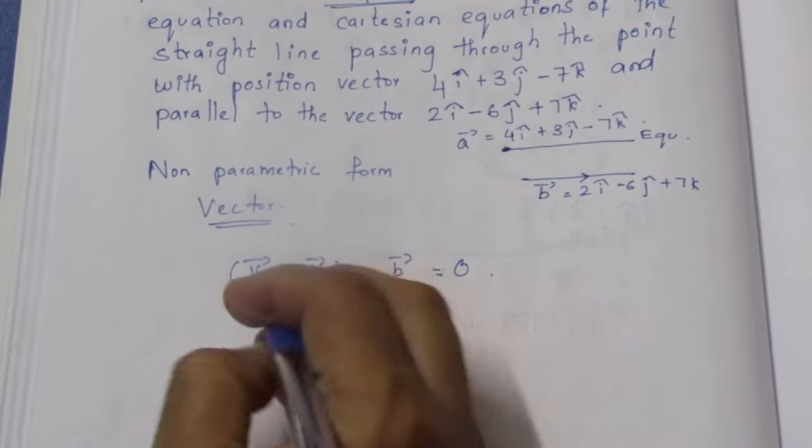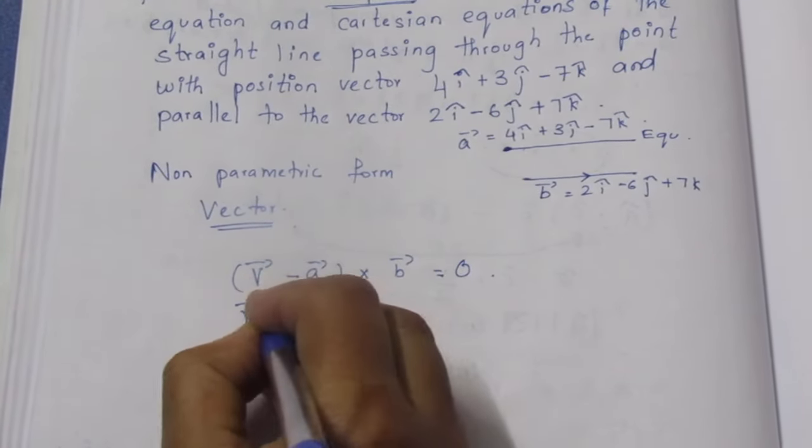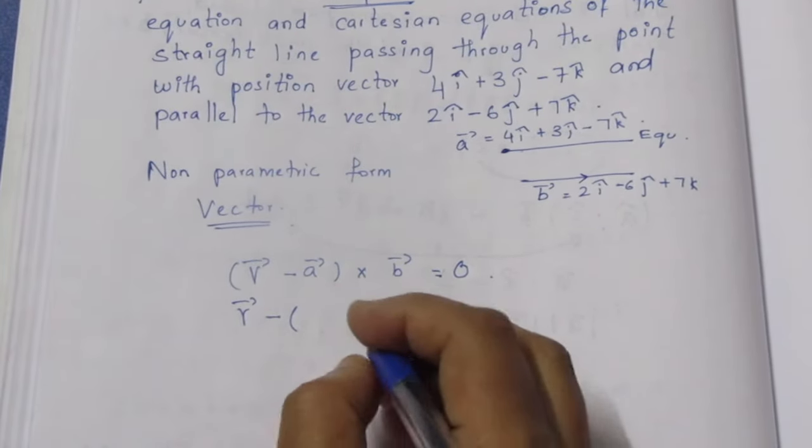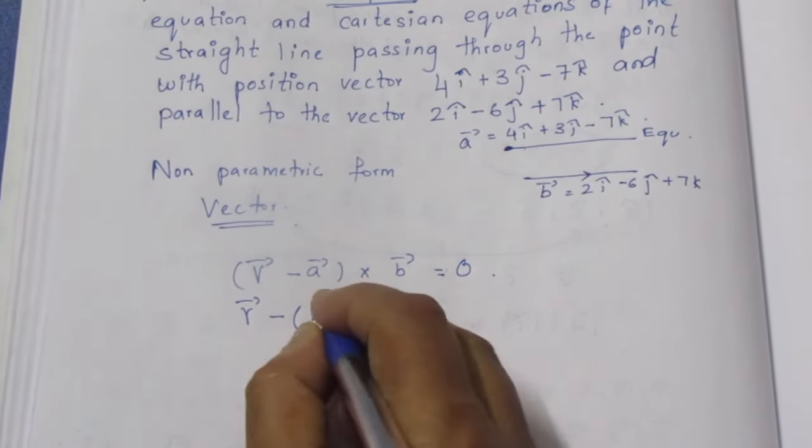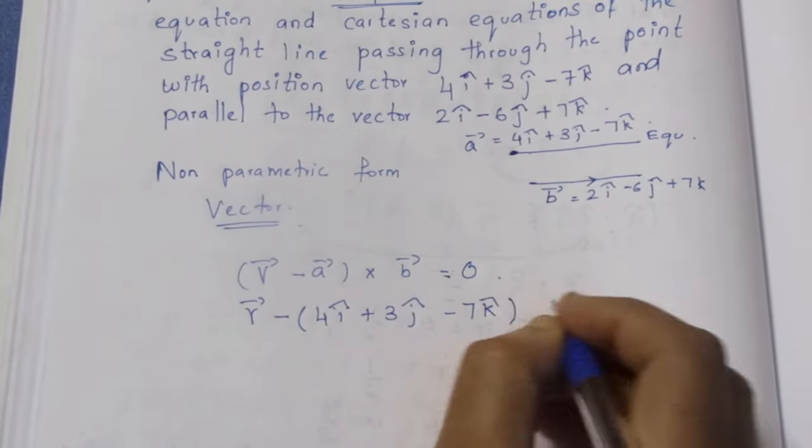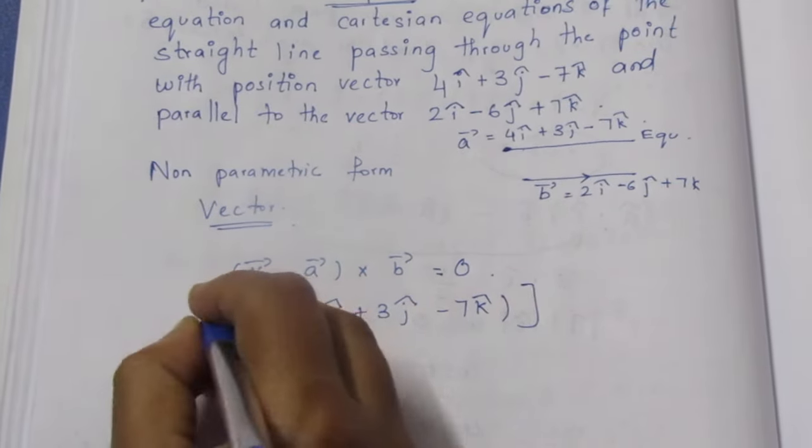R vector minus, minus 3 term. We can solve this problem. 4i cap plus 3j cap, minus 7k cap,